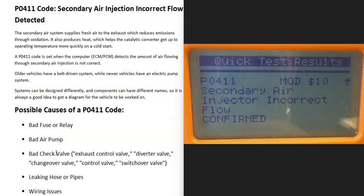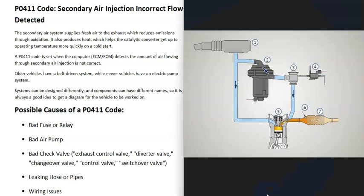Today I'm talking about a P0411 code — what it is and how you go about fixing it. A P0411 code is 'secondary air injection incorrect flow detected.' Basically, vehicles have what's called a secondary air injection system, which is for emissions, and the computer is seeing some kind of problem inside this system — mainly that the air flowing through it to the exhaust is not correct.